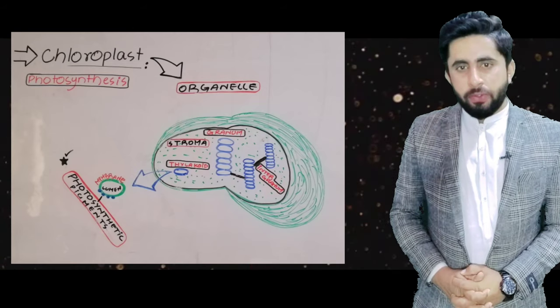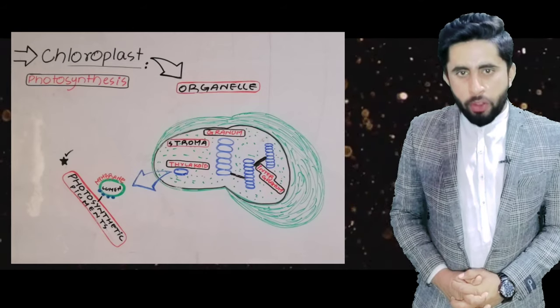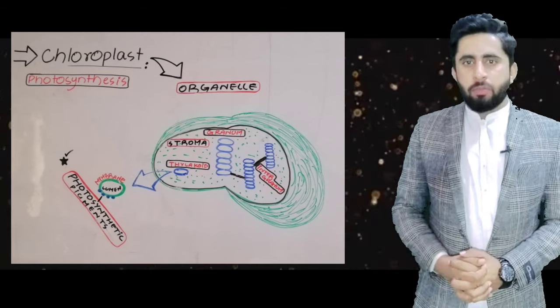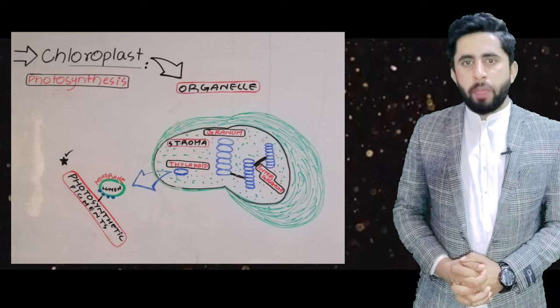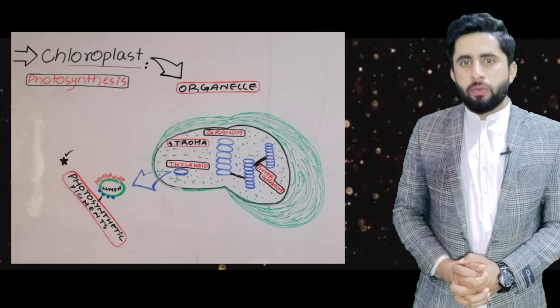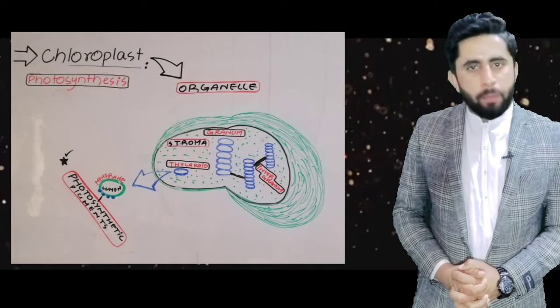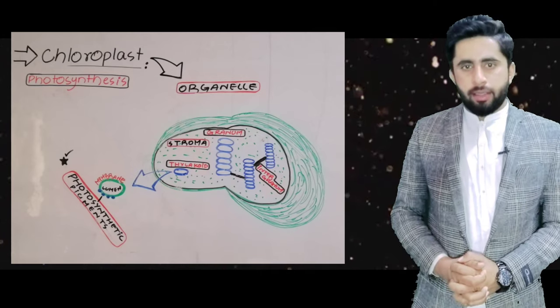Chloroplast is a very important organelle. It is a membrane-bound, pigment-containing organelle found in photosynthetic plant cells.